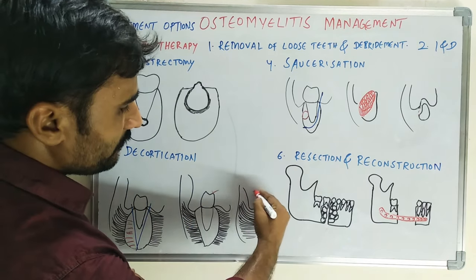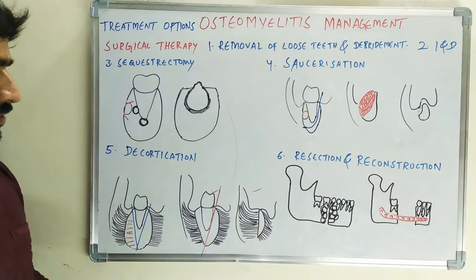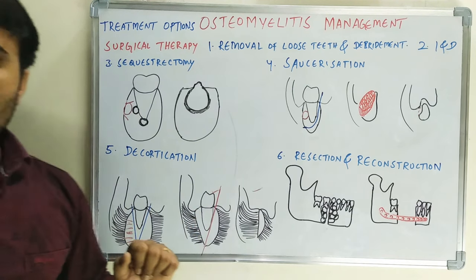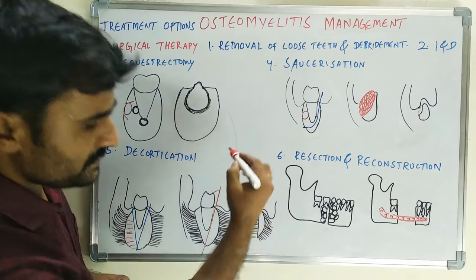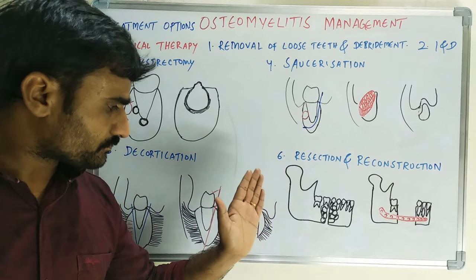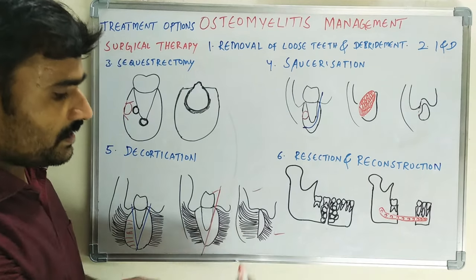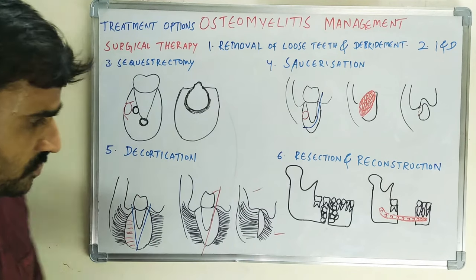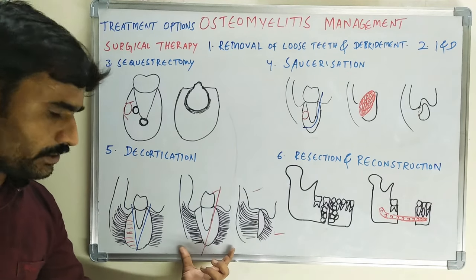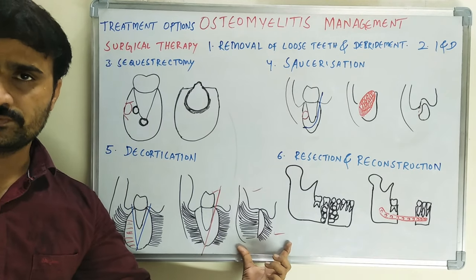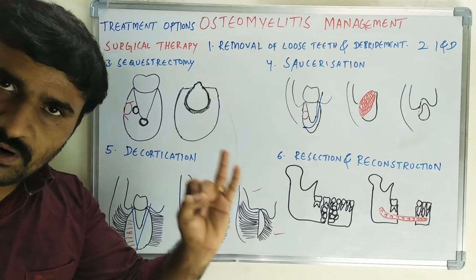When tooth removal is included, this entire amount of bone is completely removed along with the tooth. Only the lingual cortical plate attached with lingual musculature remains, and the buccal mucosal flap is also attached to the lingual plate. Almost half of the bone is removed. Decortication involves removal of the lateral cortex along with some part of the lower border of the mandible.